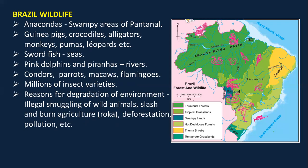For Brazil's wildlife: anacondas are present in the swampy areas of Pantanal; guinea pigs, crocodiles, alligators, monkeys, pumas, and leopards are also present. Swordfish is found in the seas; pink dolphins and piranhas are present in the rivers; condors, parrots, macaws, and flamingos are present in the country. There are millions of insect varieties.